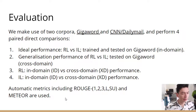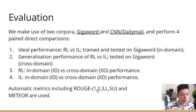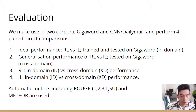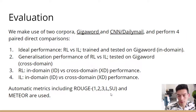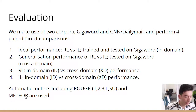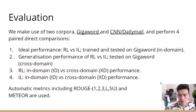The main metrics we use are Rouge Unigram, Bigram, Trigram, Longest Common Subsequence, and Skip-Unigram, as well as Meteor, which is a different machine translation evaluation metric.